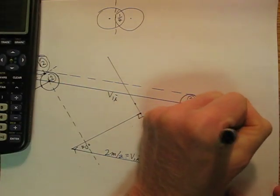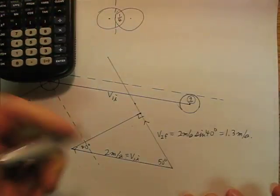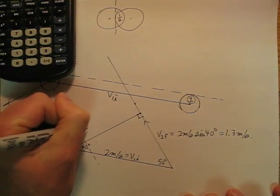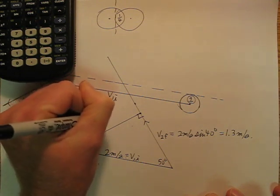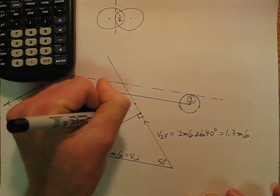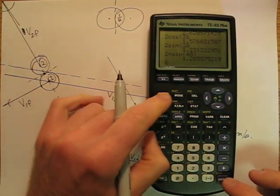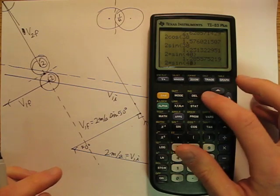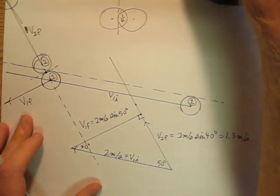And then we're going to say V1F is going to be 2 meters per second sine 50 degrees. So V1F, just going to change that 40 to a 50, 1.5 meters per second.